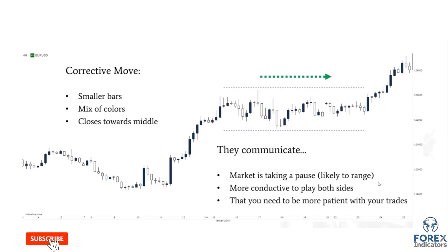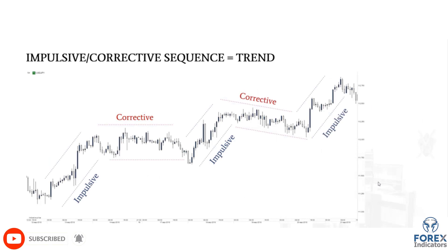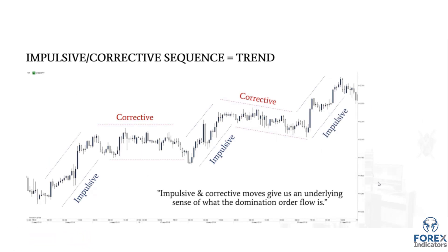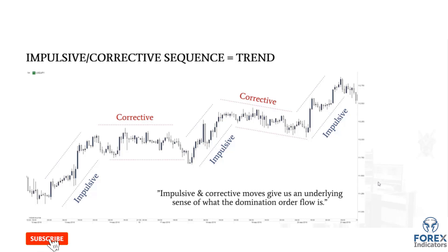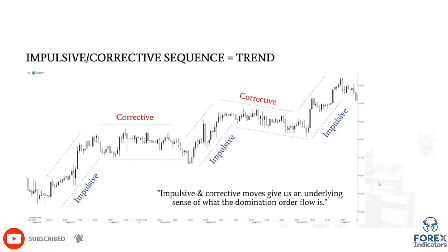It's important to understand that impulsive and corrective moves tend to operate in a pattern. About 75% of the time, an impulsive move is followed by a corrective move, which is then followed by another impulsive move continuing in the same direction. It's less likely you'll see a bullish impulsive move followed immediately by a counter-trend bearish impulsive move. This series continues until a counter-trend force stronger than the trending force appears — buyers remain in control until a greater presence of sellers emerges. Understanding this chain helps you anticipate continuation until the pattern is disrupted.